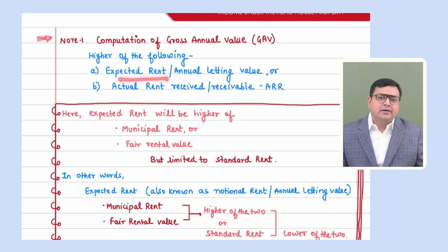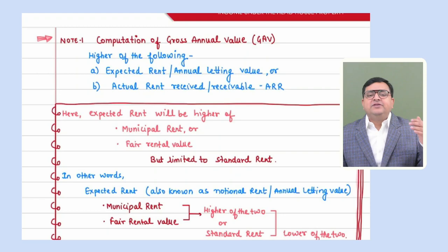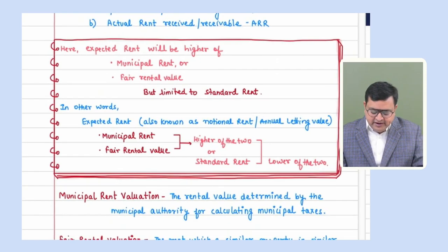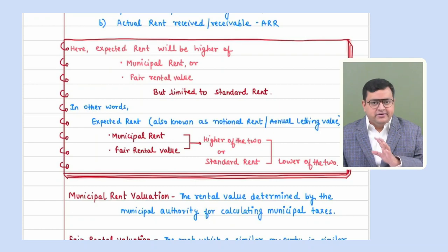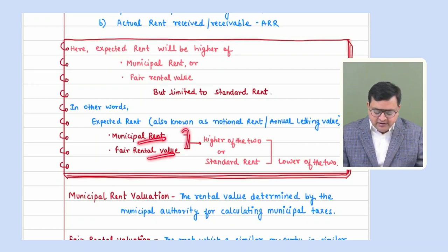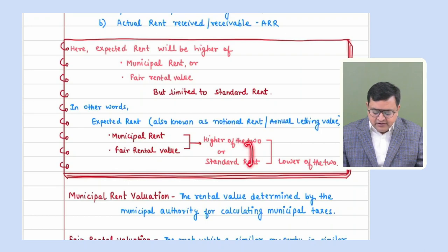How will you compute your expected rent or annual letting value? We see your municipal value or fair rental value, whichever is higher. But if there is a standard rent also given in the question, then compare with the standard rent and take whichever is lower. So: municipal value or fair rental value, whichever is higher — but limited to standard rent if standard rent is available, taking whichever is lower.